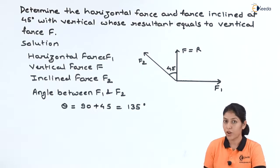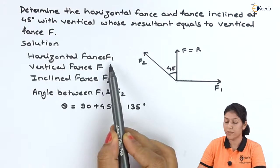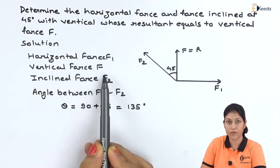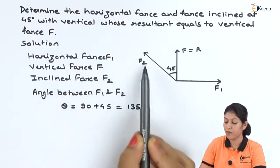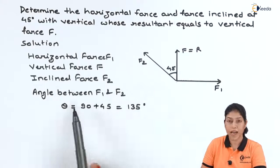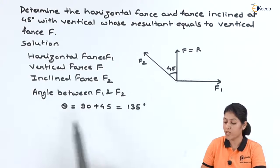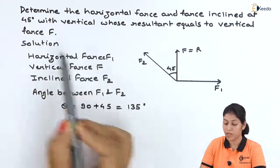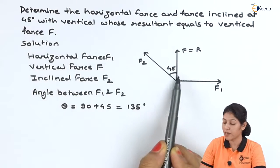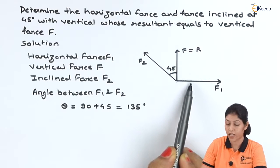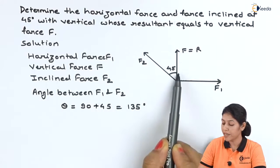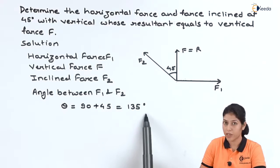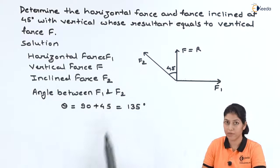Let us start the solution. Our horizontal force is represented by F1, the vertical force is represented as F — the resultant — and the inclined force is F2. The angle between F1 and F2 can be found: since the angle of F2 with the vertical is 45 degrees, the angle between forces F1 and F2 will be 90 plus 45, so this angle will be 135 degrees. We now have all the given values.